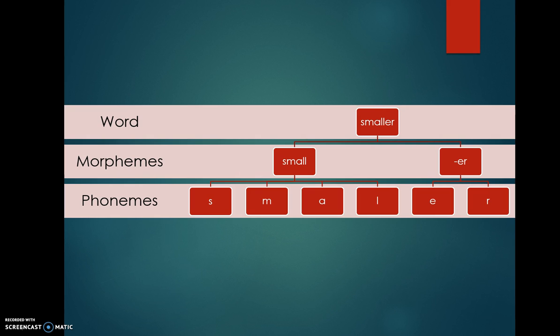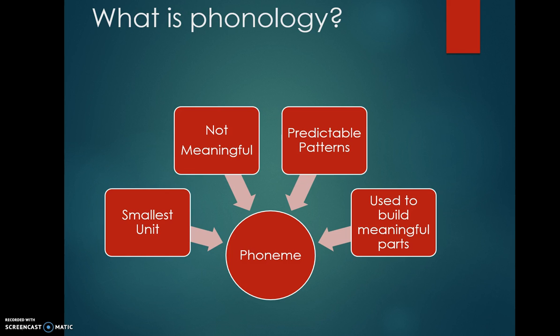And then, of course, the morphemes can be put together into sentences, which we'll look at in syntax. So for right now, we need to understand that phonemes are those smallest units that don't mean anything on their own, but that can be used in predictable patterns. You can't just put any phoneme anywhere. And that these predictable patterns are used to build parts of speech that do have meaning, those parts of speech that we're going to call morphemes.